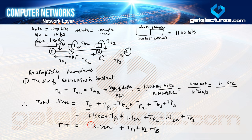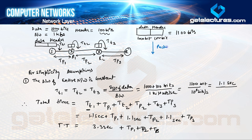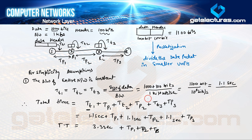This 3.3 seconds plus propagation times is the total time required when we have not done any packetization — that is, when we have not divided the packet into smaller units.